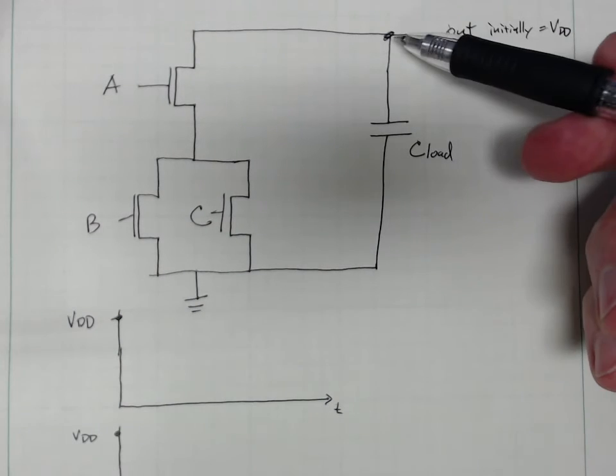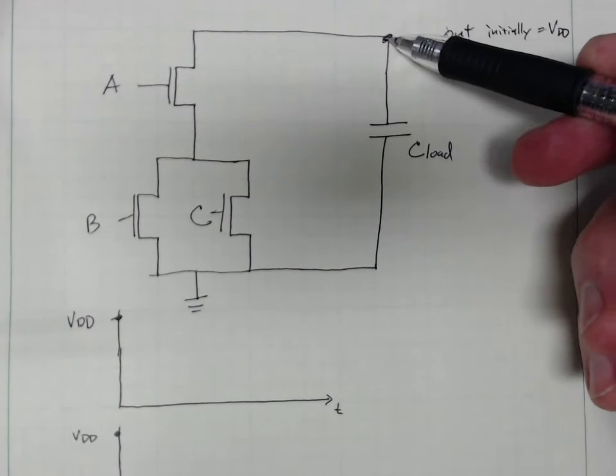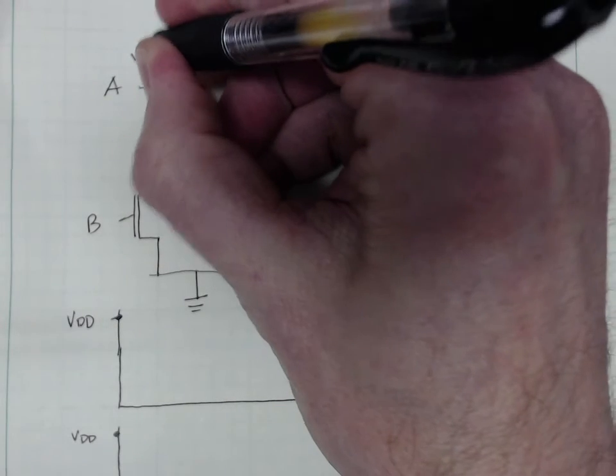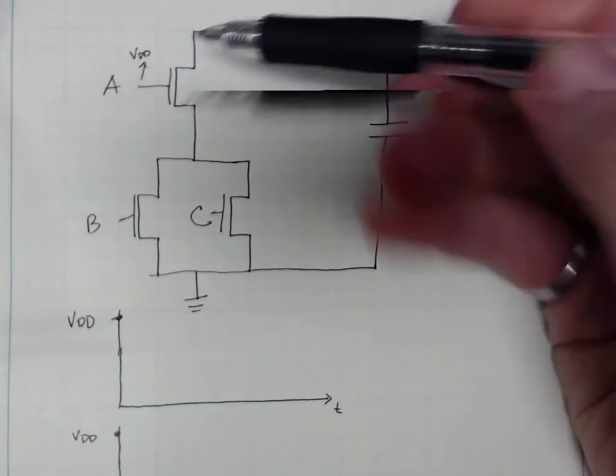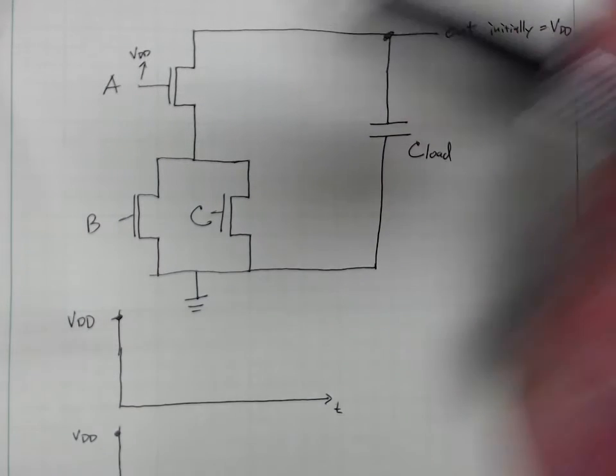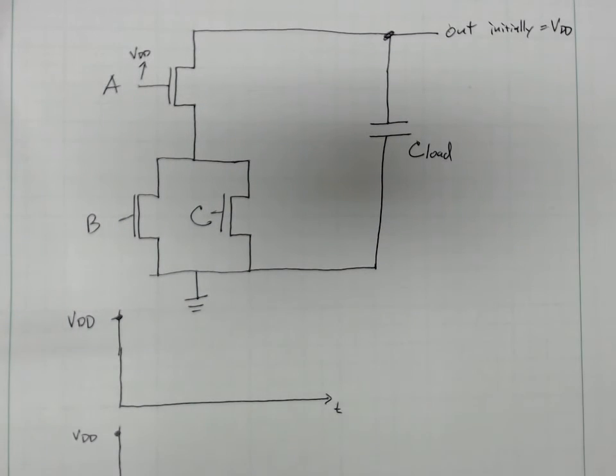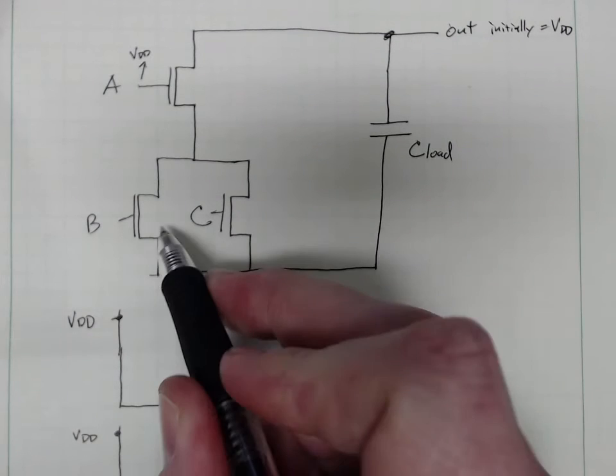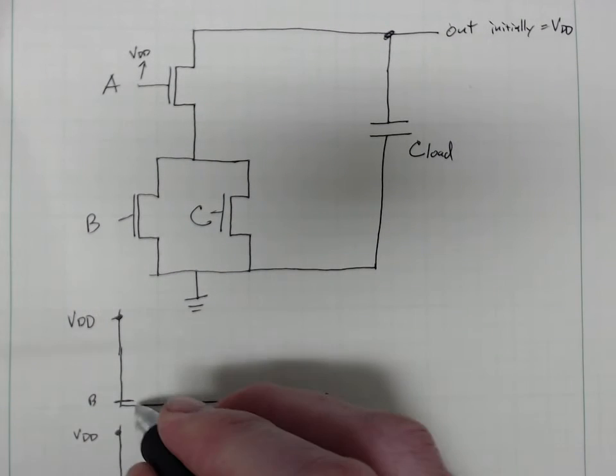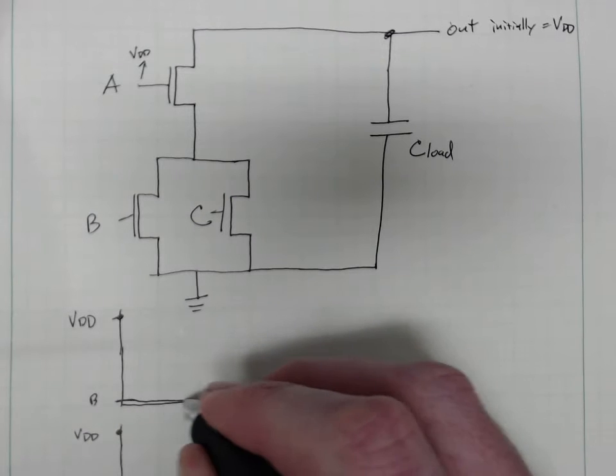Initially our load capacitor is all charged up to the power supply. A is going to be high all the time because we know that if this switch is not on, this output is not going down—it's in series. In our first condition, input B is low and B is gonna just stay low the whole time.